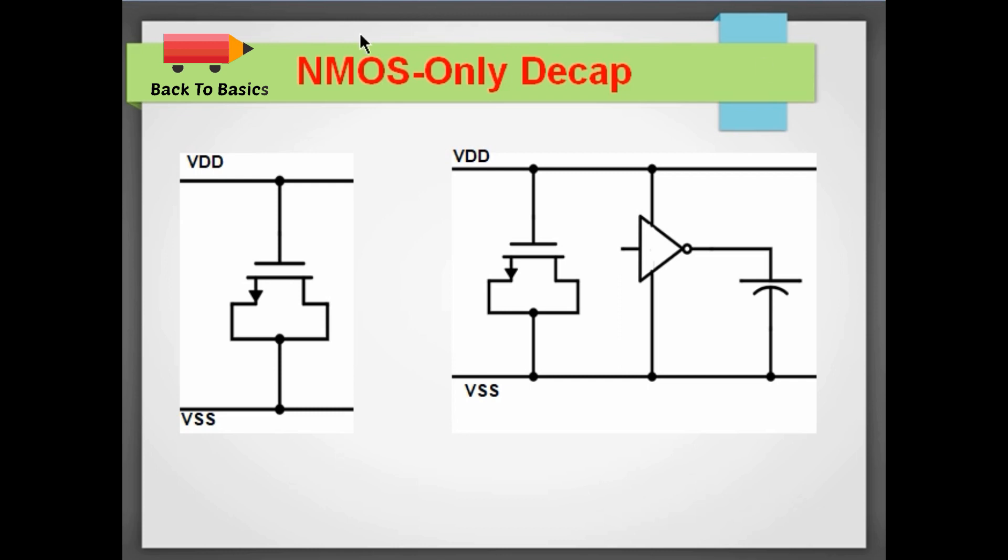And the first one in line is NMOS only decap cell. As you can see, this is an NMOS transistor and the gate of this transistor is connected to VDD rail and the source and drain are shorted together and are connected to VSS rail. So this NMOS now acts like a capacitor and this capacitor sits between VDD and VSS rail like this.